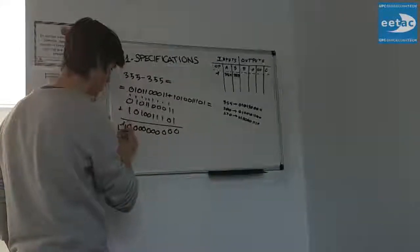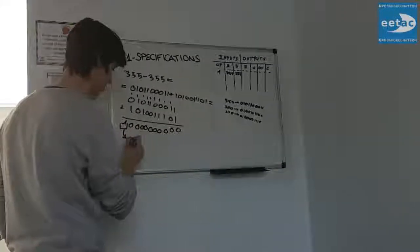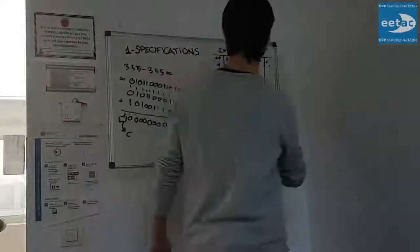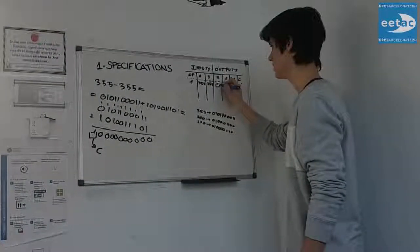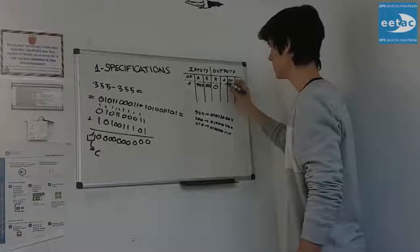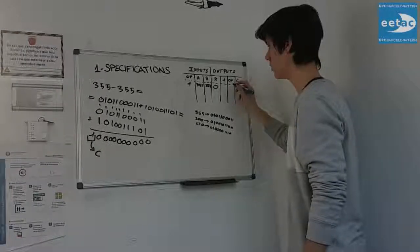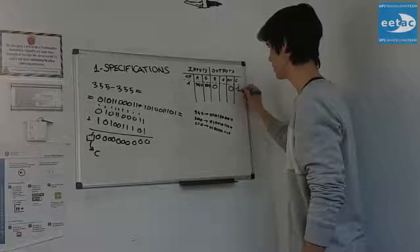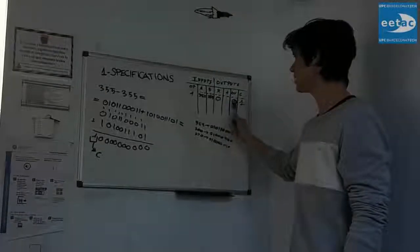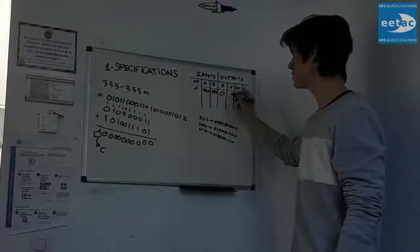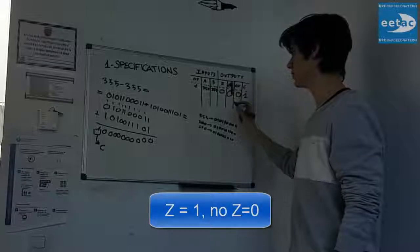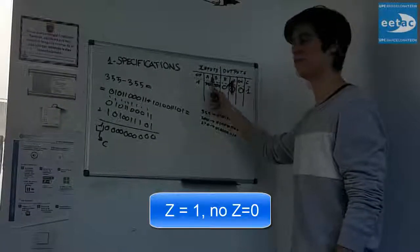So we calculate this 355 plus minus 355. This is the carry out and then we have the result is 0, overflow is 0, and carry is 1. Since result and overflow are 0, Z is 0. And we have the first example.